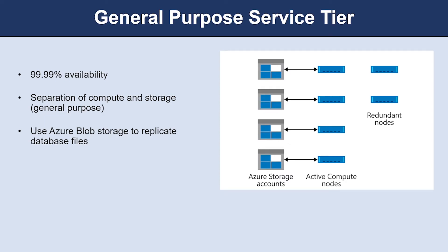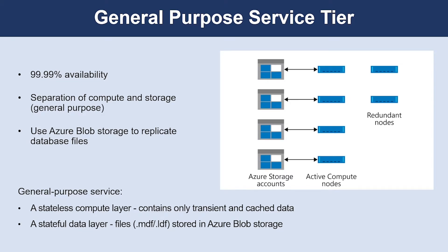Let's look into the General Purpose service tier for Azure SQL Database and SQL Managed Instance. The architectural model for the General Purpose service tier is based on a separation of compute and storage. This model relies on the high availability and reliability of blob storage that transparently replicates database files and guarantees no data loss if underlying infrastructure failures occur. This diagram shows four nodes in the standard architectural model with separated compute and storage layers.